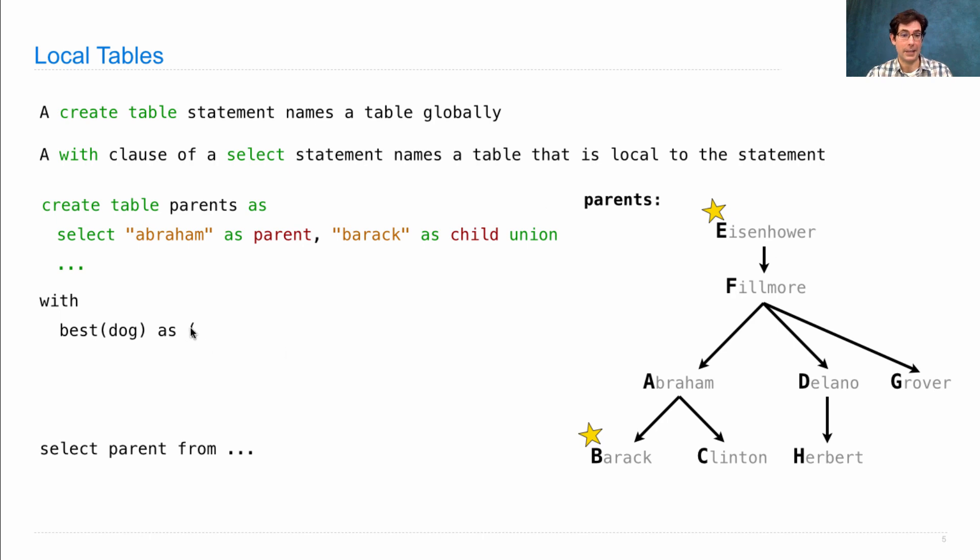Then you need an as, an open parenthesis, and the select statement. Select Eisenhower, select Barack will give us a table with two rows, the Eisenhower and the Barack row. What's the column name again? Instead of putting as here, you just put the column name up there. Close your parenthesis to say that that's done. And then we'll have created a table called best with a column dog that has Eisenhower and Barack in it.